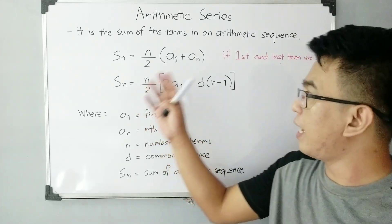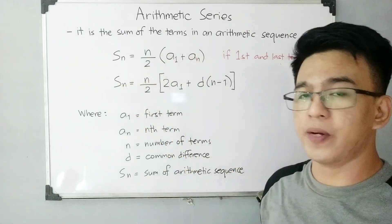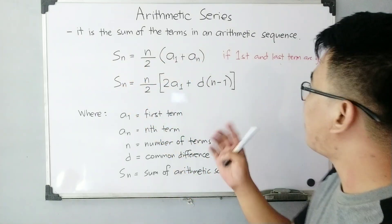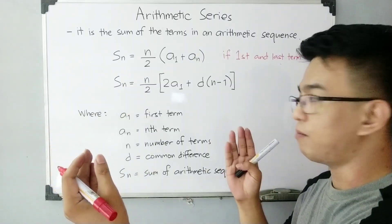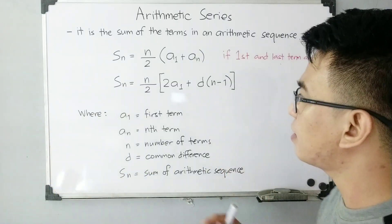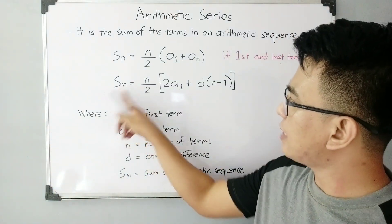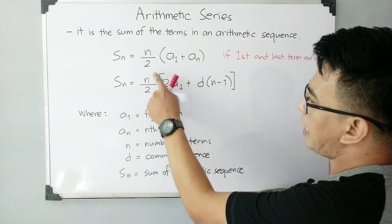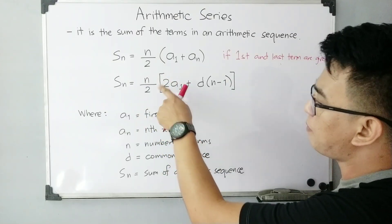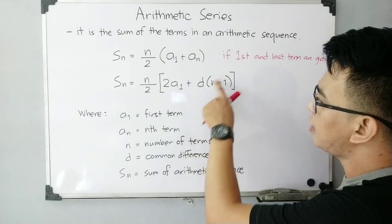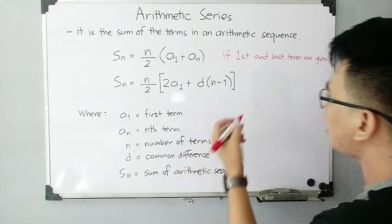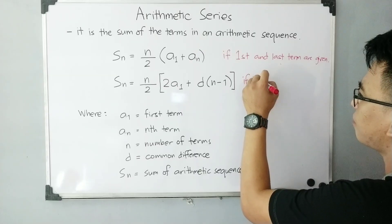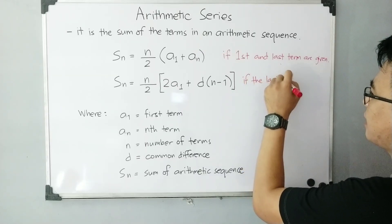You will use the formula S sub n = n/2 times (a sub 1 plus a sub n) when the first and last term are given. Next, if we have S sub n = n/2 times (2·a sub 1 + d times (n minus 1)), we use this if the last term is not given.